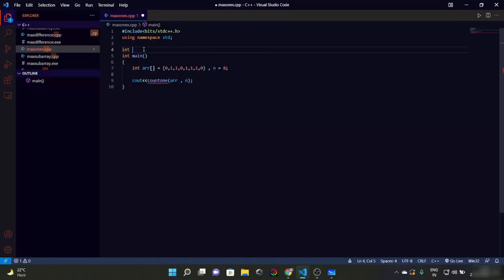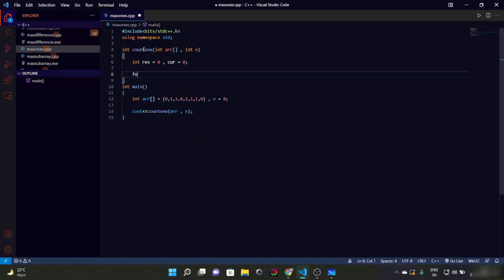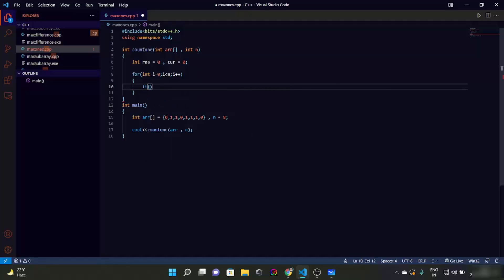Now let's make our int count_one function. We have two variables: res is 0, curr is 0. We are going to loop for int i equals 0, i less than n, i plus plus.